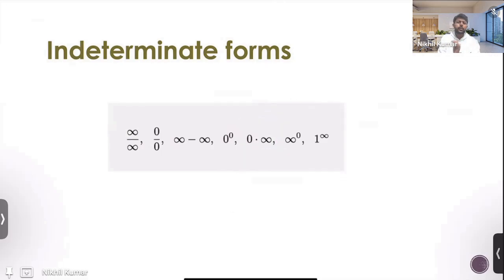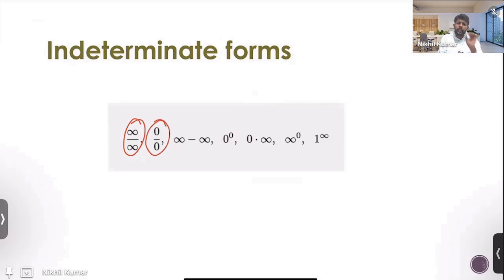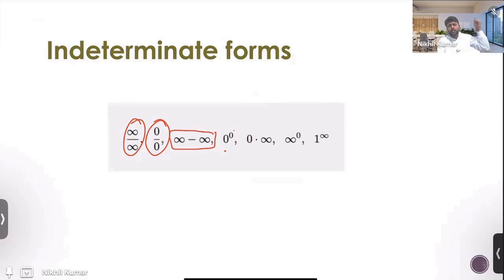Before we proceed further, let's quickly take a look at the different indeterminate forms. Infinity upon infinity — we've all seen this kind of indeterminate form before. Zero upon zero: something tending to zero upon something very, very small — it's indeterminate. Infinity minus infinity is also indeterminate. We have zero to the power zero, meaning something very, very small to the power something very, very small — what's it going to be? No one knows the exact value. Similarly, we have something very, very small multiplied by something very, very large — also indeterminate.